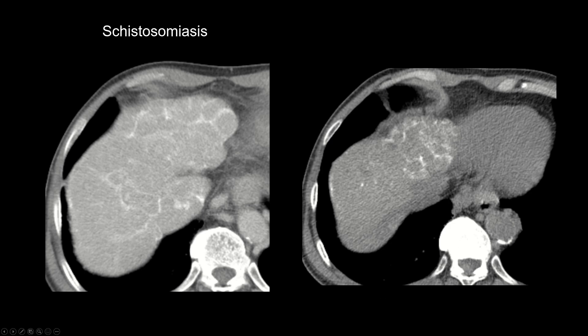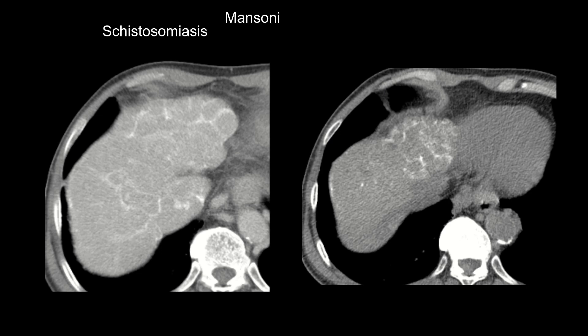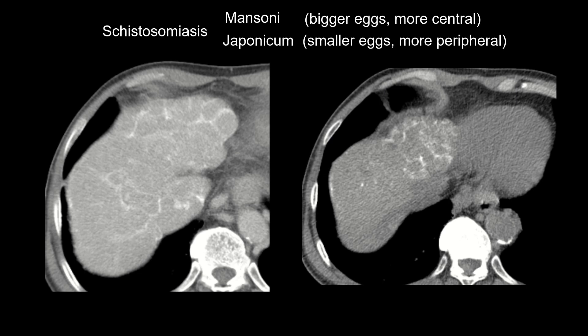As background, schistosomiasis is a parasitic infection that's actually pretty common worldwide, especially in Africa, and less common in Canada and the U.S. It affects many body systems, but in the liver you get deposition of small eggs around the portal vein that leads to periportal fibrosis and eventually cirrhosis. The two most common species affecting the liver are schistosomiasis mansoni and schistosomiasis japonicum. The eggs are bigger in mansoni, deposited along larger portal veins, while in japonicum they are smaller and affect more peripheral portal veins.